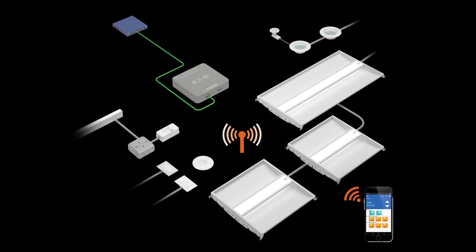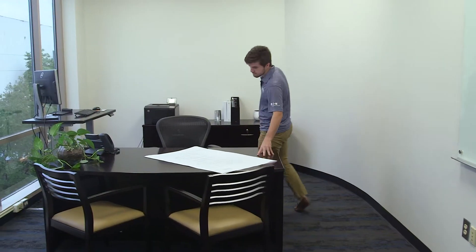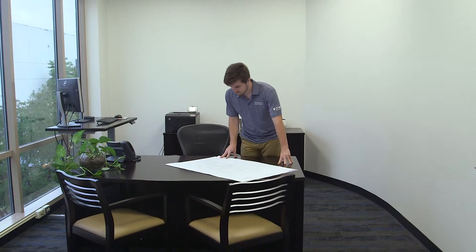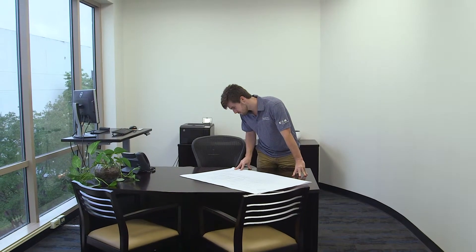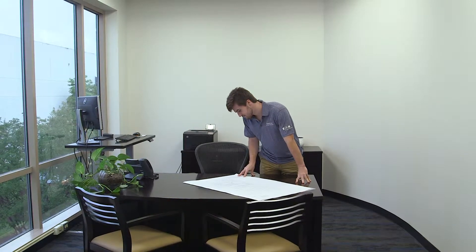Lighting is controlled automatically by occupancy sensors in the space. Fixtures with integrated sensors, wall-mount sensors, and ceiling sensors in the same area are grouped into one control group. If any sensor in the group senses motion, the system will turn on all area lighting to a 50% light level and will turn on all area receptacles.